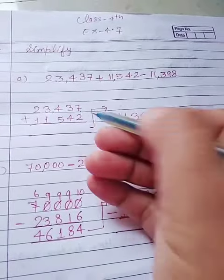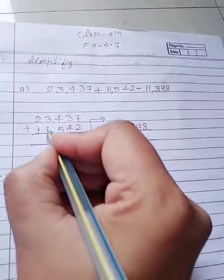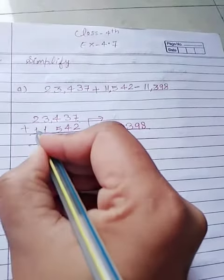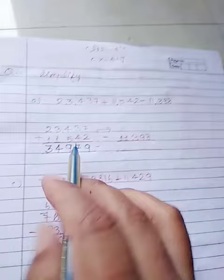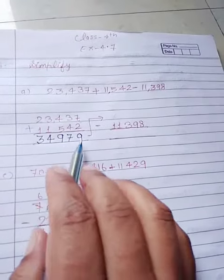3 plus 4, 7. 4 plus 5, 9. 3 plus 1, 4. And 2 plus 1, 3. And our answer is 34,979.